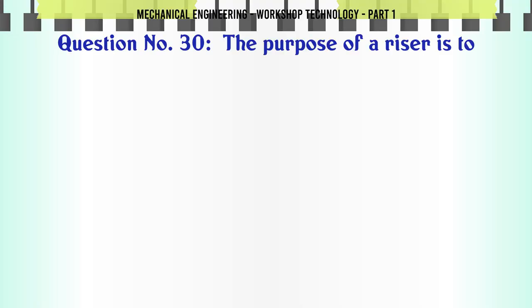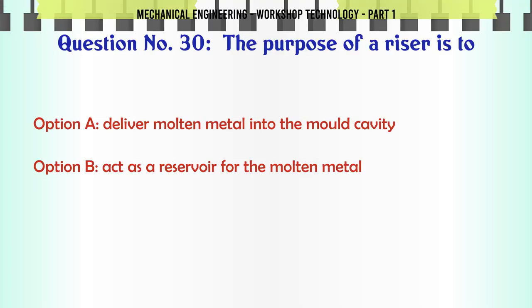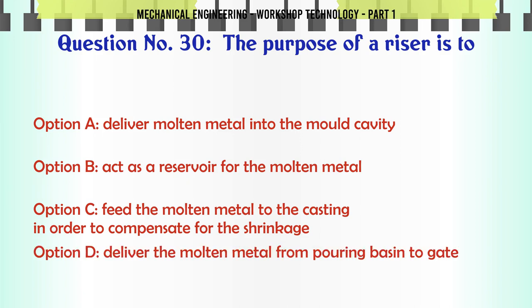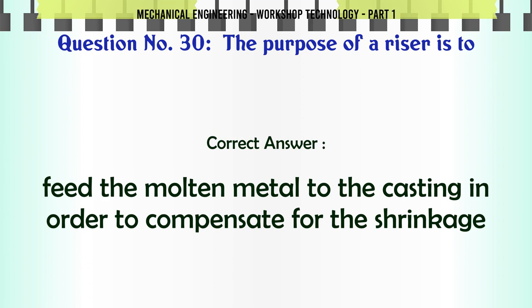The purpose of a riser is to: A. Deliver molten metal into the mold cavity. B. Act as a reservoir for the molten metal. C. Feed the molten metal to the casting in order to compensate for the shrinkage. D. Deliver the molten metal from pouring basin to gate. The correct answer is: Feed the molten metal to the casting in order to compensate for the shrinkage.